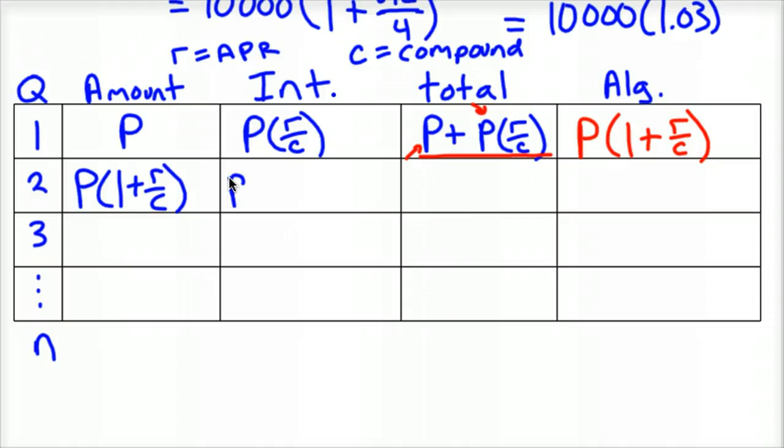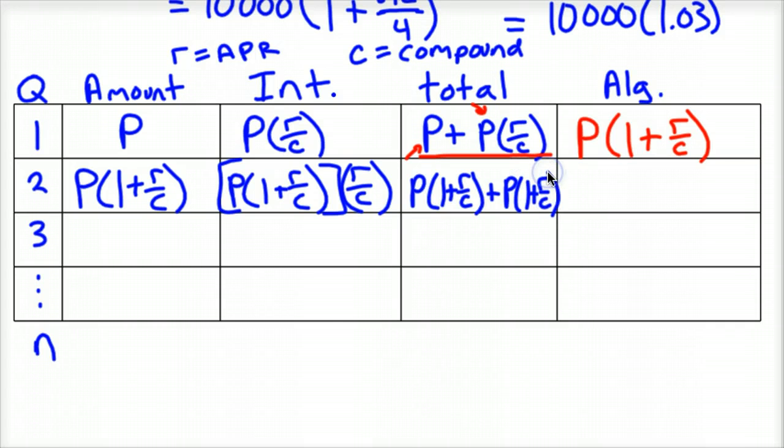So now on the second quarter, we'd have P times 1 plus R over C. And to get our interest, we'd take that amount, P times 1 plus R over C, times that whole thing, times R over C, which is our interest. It was 0.03 up above. But in our case, it's R over C each time. And then you add those for the total. You add your first amount, which is P times 1 plus R over C, plus what we just calculated, which is P times 1 plus R over C, times R over C.